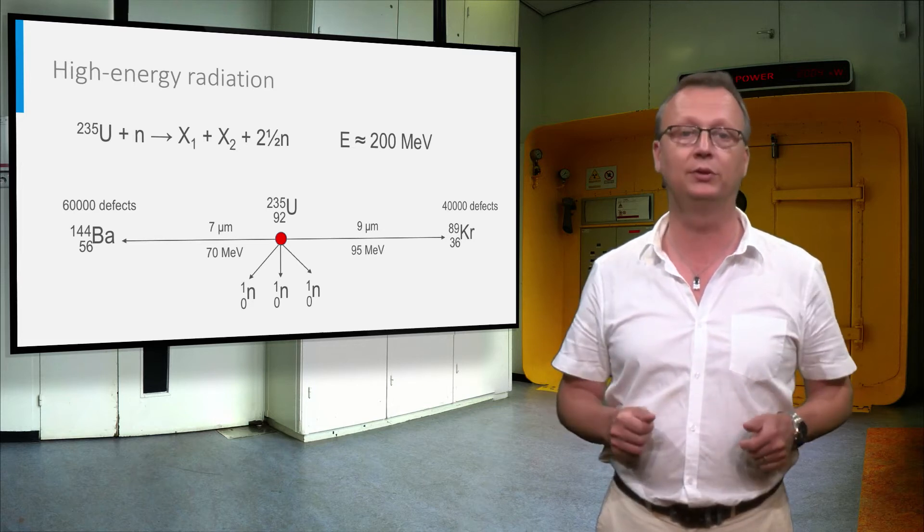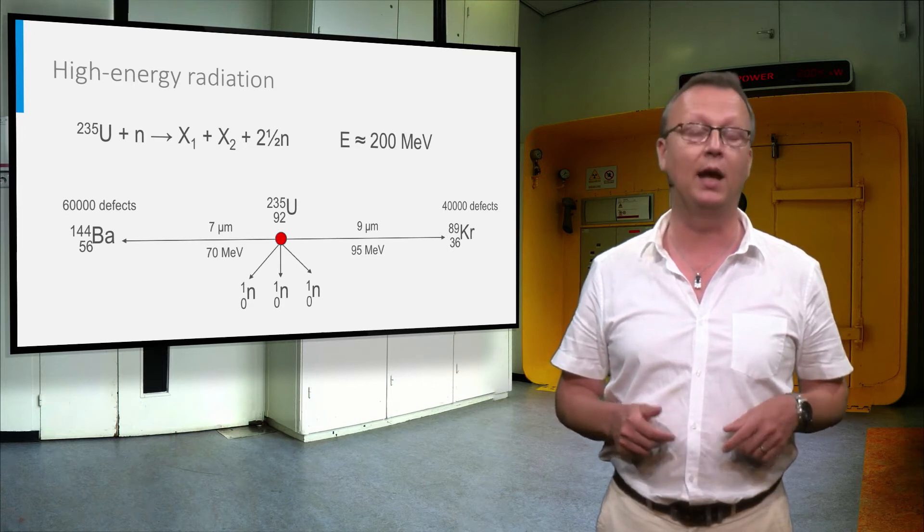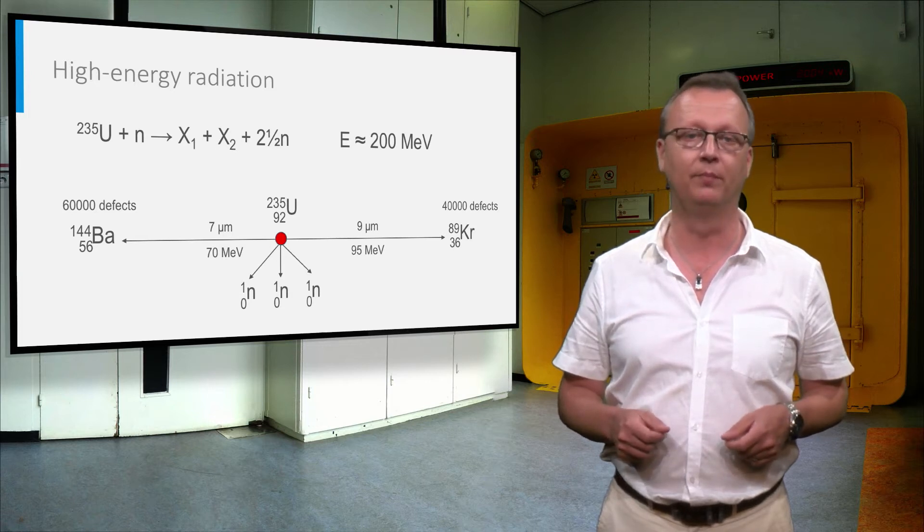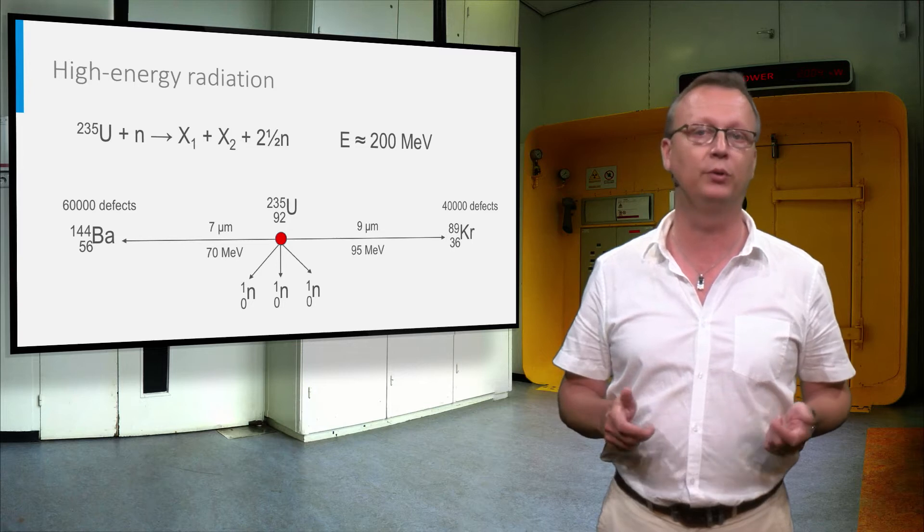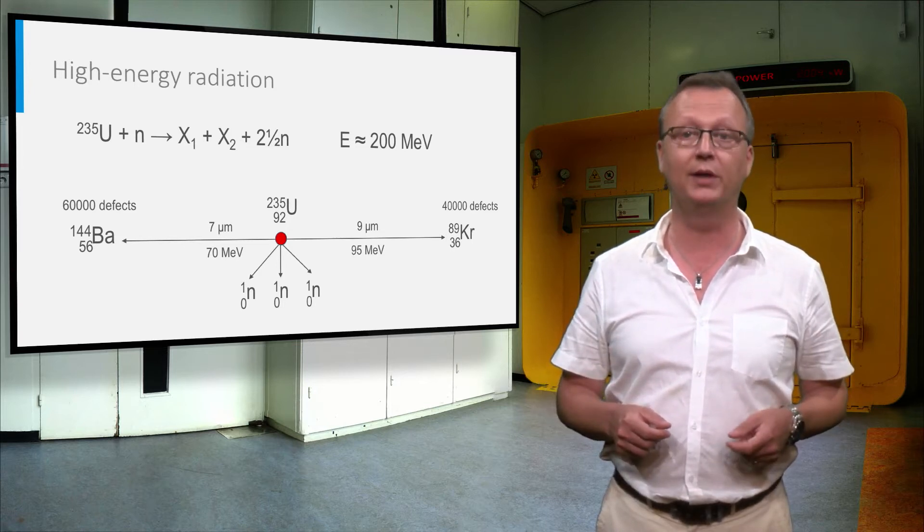A heavy fission product such as barium-144 creates about 60,000 defects, a light one like Krypton-89 about 40,000. Many of these defects heal again quickly because of the temperature of the fuel, but some remain and even form clusters or extended defects.